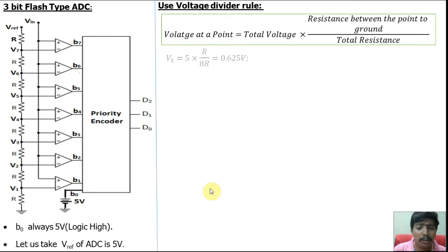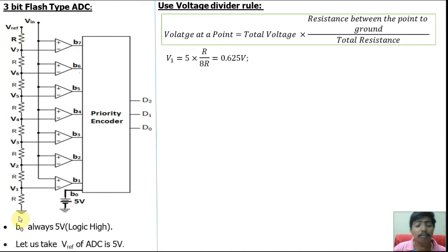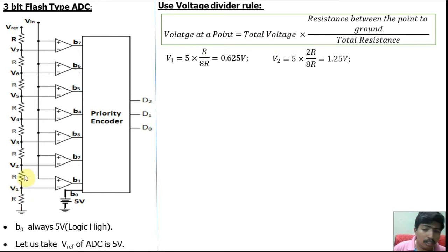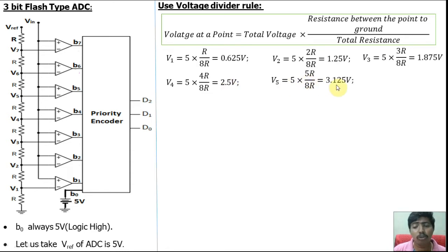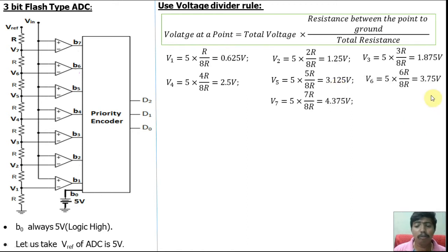Using the voltage divider rule: V1 equals 5 volts into R divided by 8R, giving V1 = 0.625 volt. V2 equals 5 into 2R divided by 8R, giving V2 = 1.25 volt. V3 equals 5 into 3R divided by 8R, giving V3 = 1.875 volt. Similarly, V4 = 2.5 V, V5 = 3.125 V, V6 = 3.75 V, and V7 = 4.375 volt.